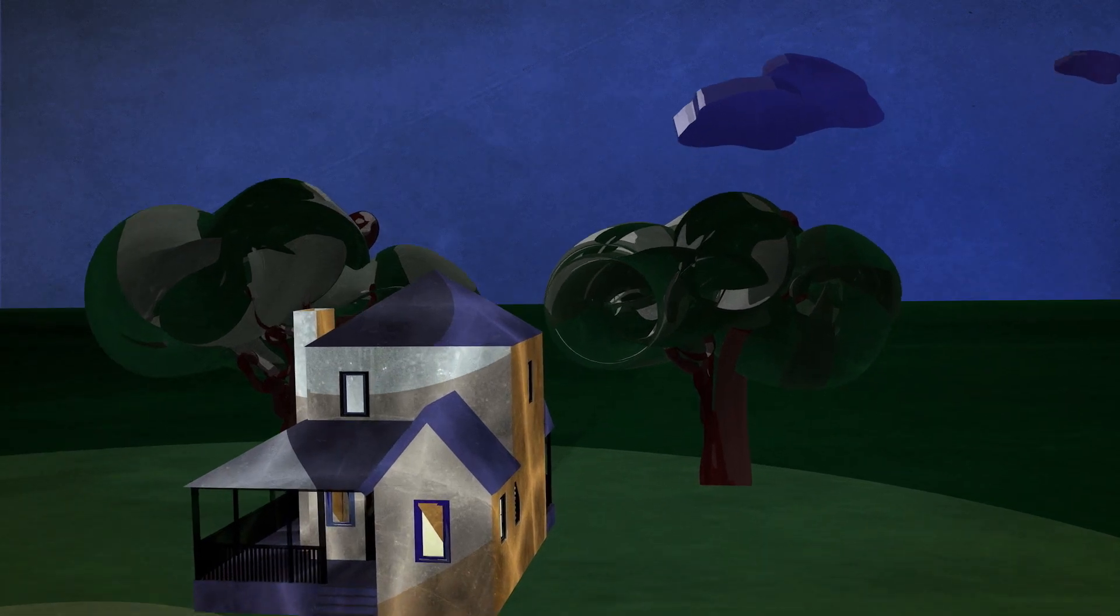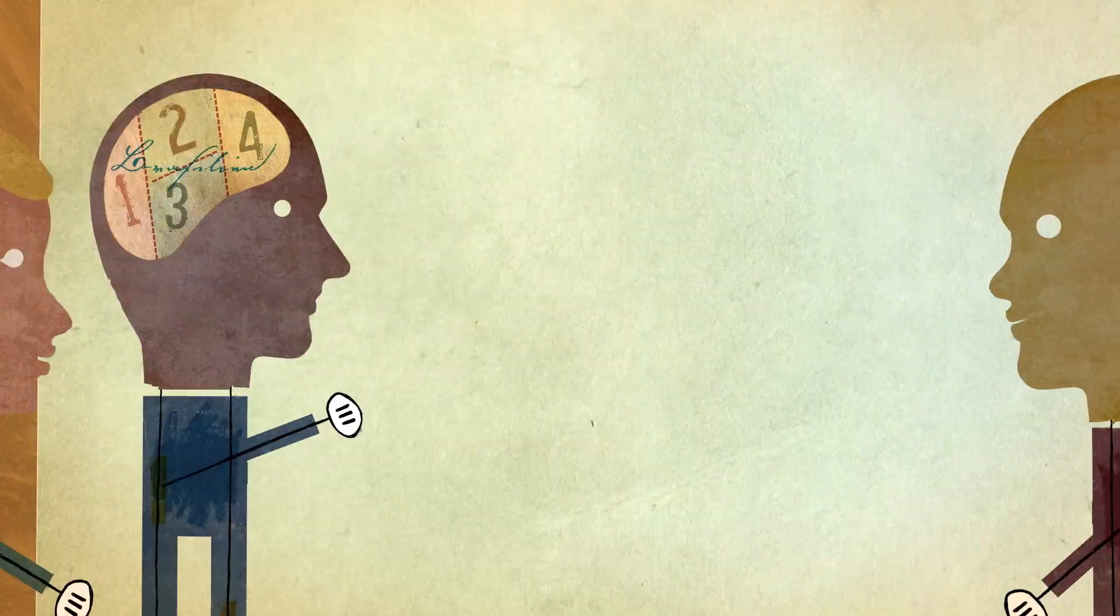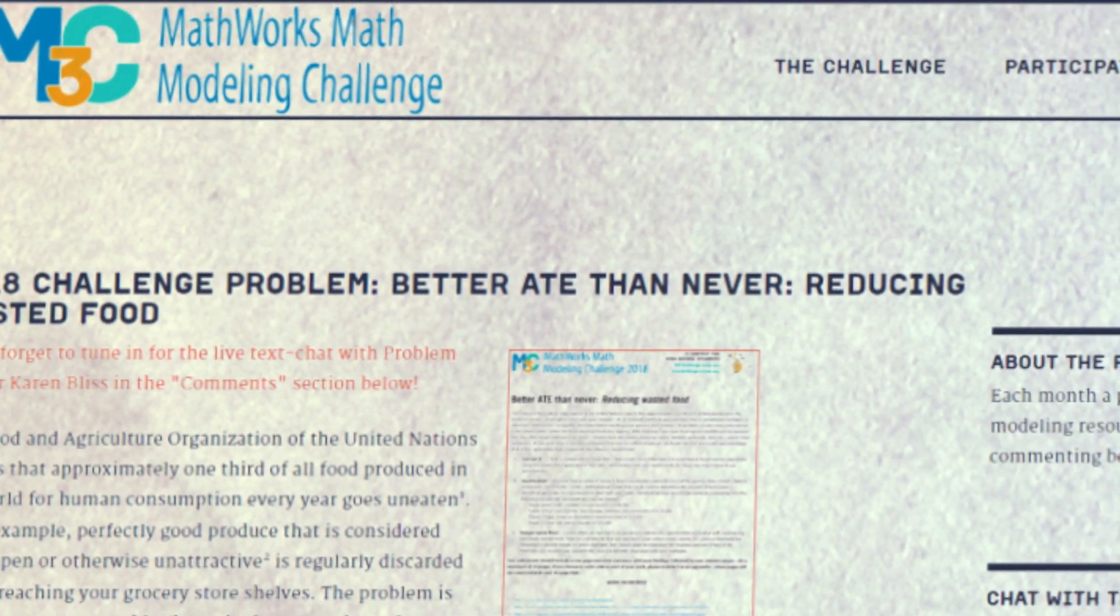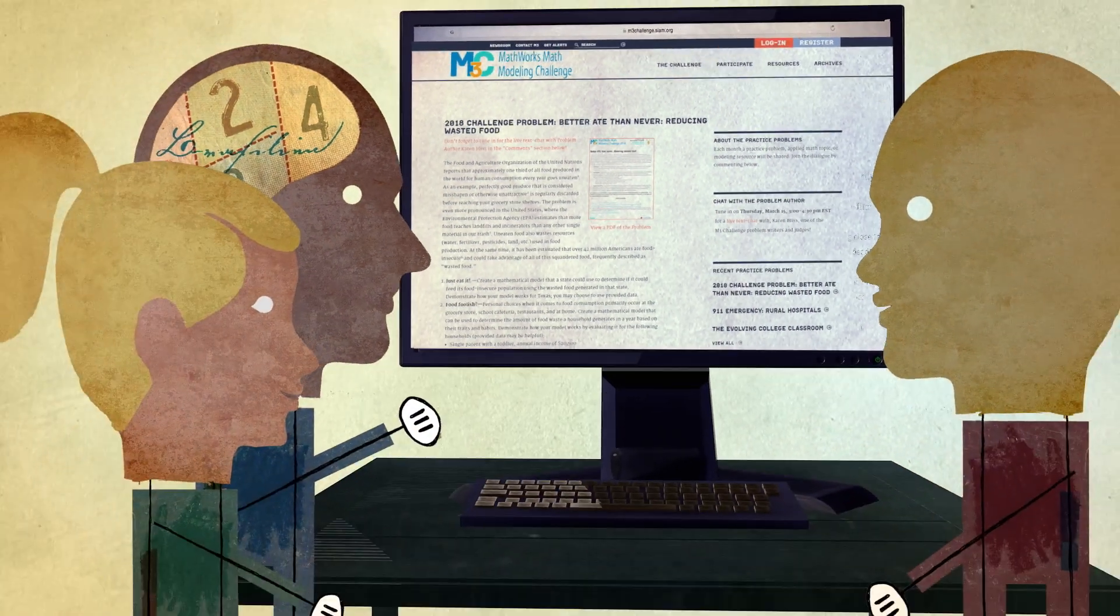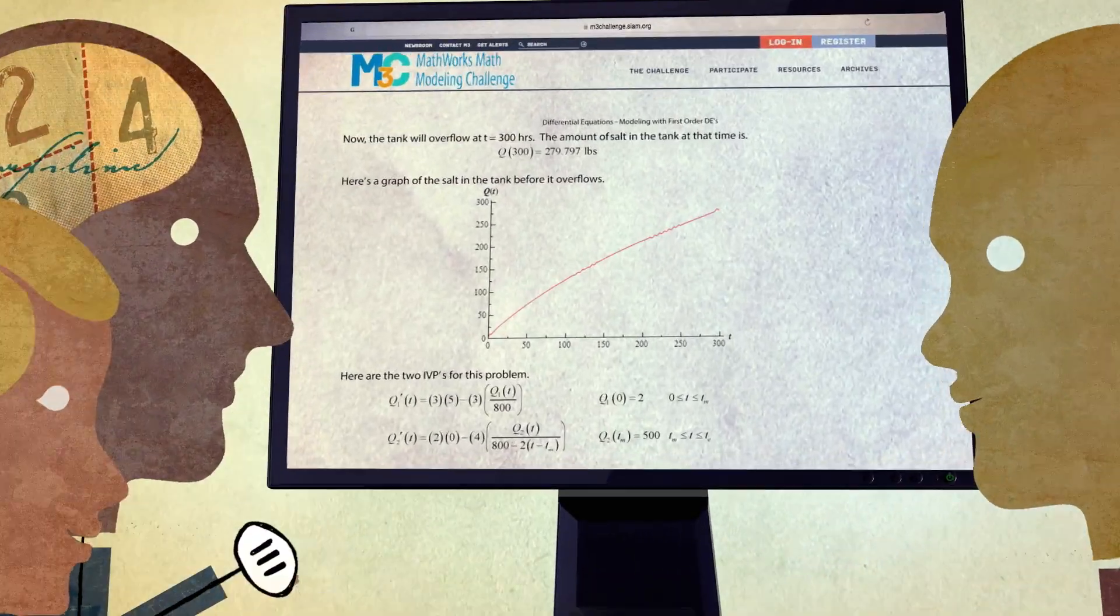Here's how it works. Get a team together. On the challenge day, download your problem. The clock starts. Your team has 14 hours to develop a mathematical model in response to the problem.